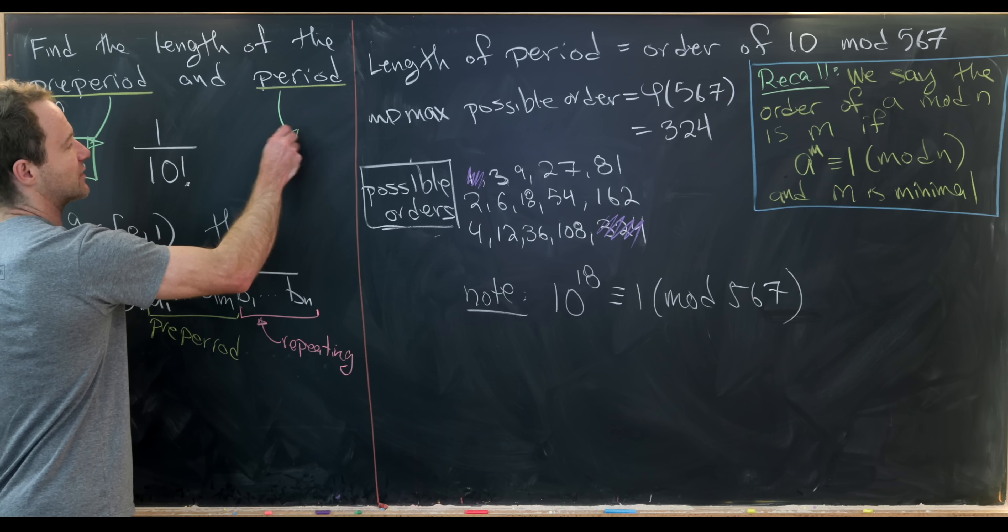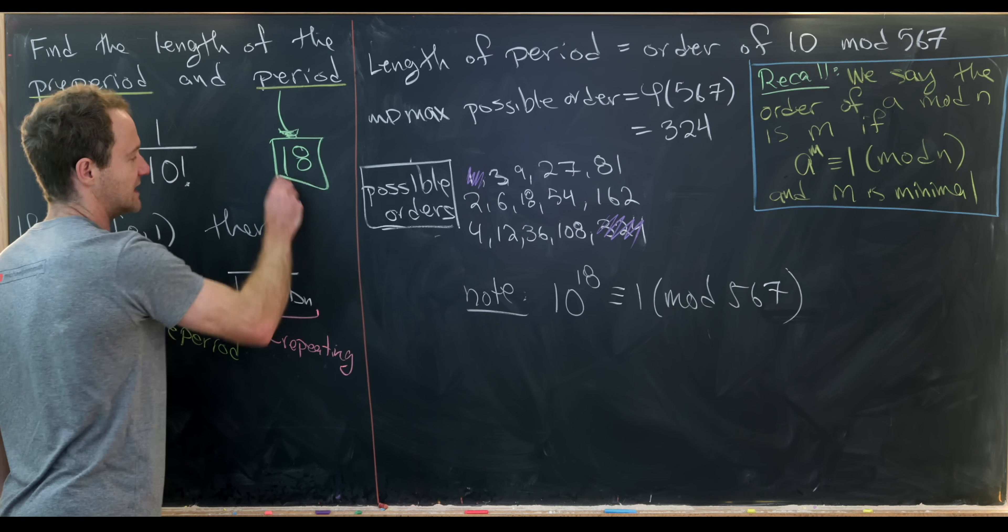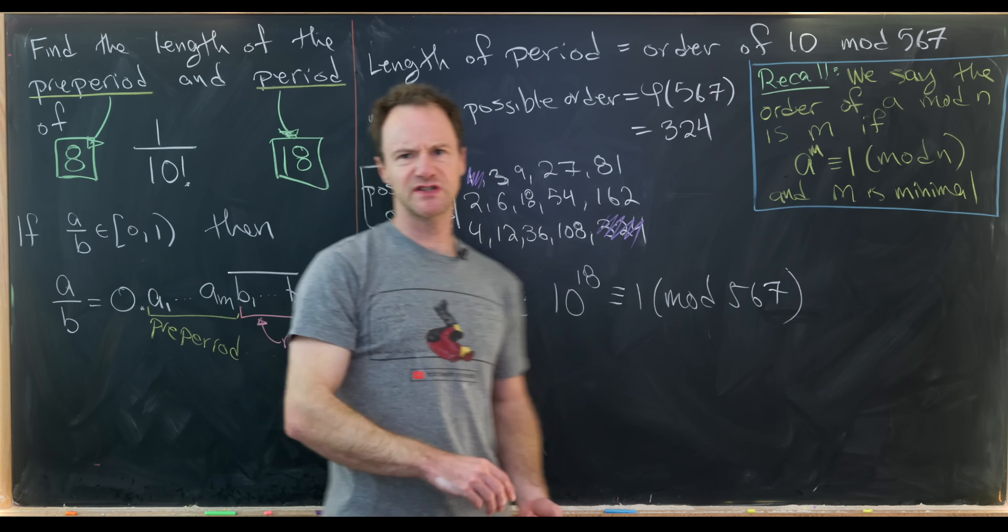So that means not only do we know the pre-period is 8, but we know the length of the period is 18, which is exactly what we wanted.